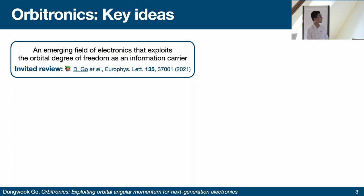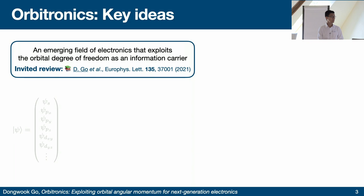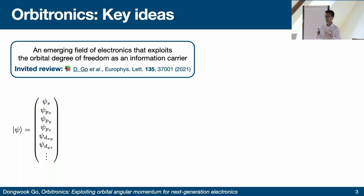Orbitronics is an emerging field of electronics that exploits the orbital degree of freedom as an information carrier. Electronic wave functions have two different degrees of freedom: one is spin, which we exploit in spintronics, and the other — which has been largely overlooked — is the orbital degree of freedom. You can write down your electronic Bloch wave function and it will have an s component, px, py, pz components, and so on.